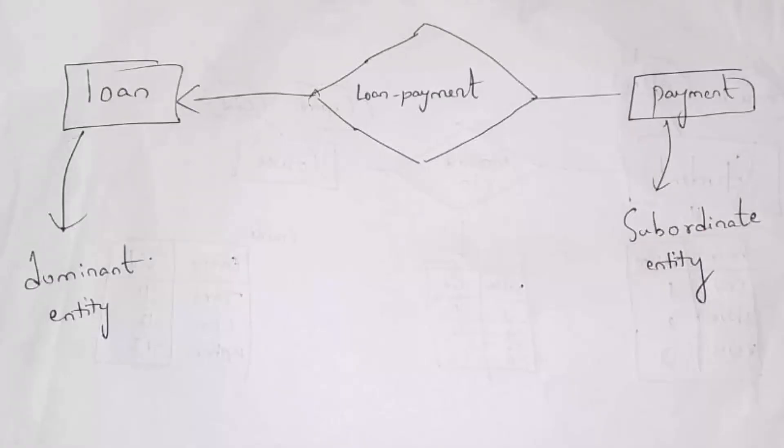Next I will explain what is dominant entity and subordinate entity. For example, there are two entities: loan entity and payment entity. I am connecting these two entities by establishing a loan payment relationship. If there is no loan entity, there will not be a payment entity. For example, if I delete the loan entity, then automatically the payment entity also gets deleted. So we call this loan entity as the dominant entity and the payment entity as the subordinate entity.